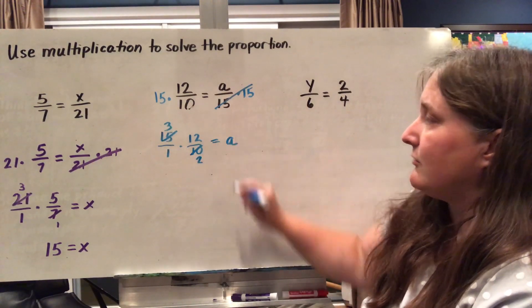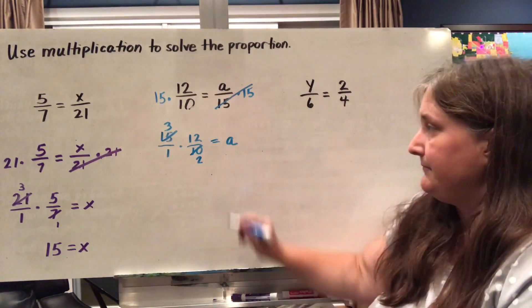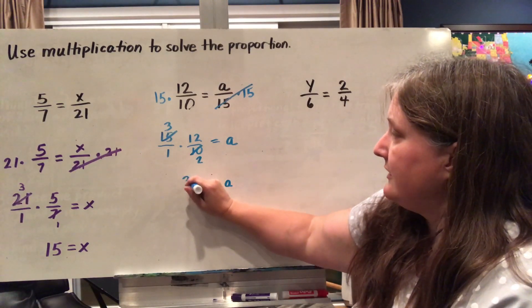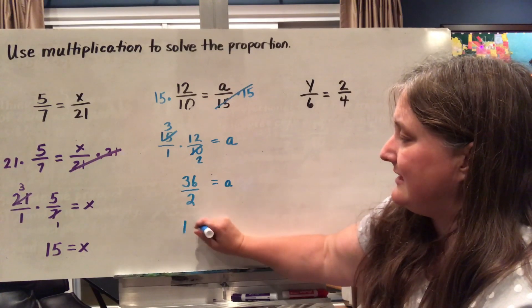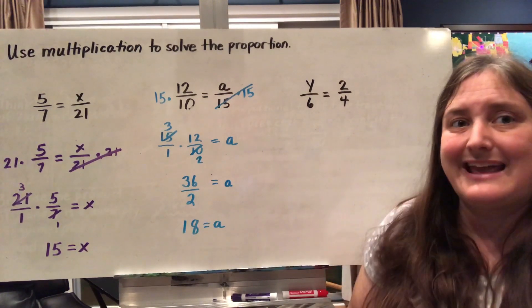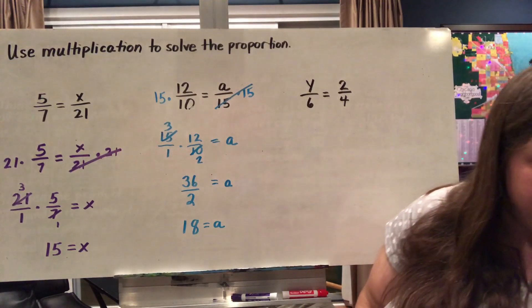And I get for my grand total here for A, 36 over 2, which will reduce to 18. So my value for A is 18. A is worth 18.